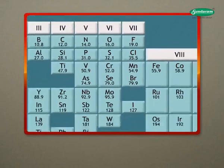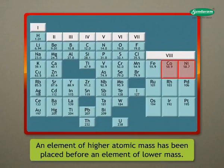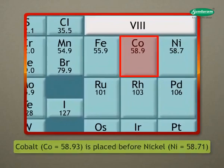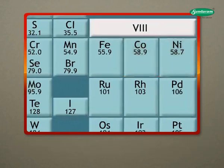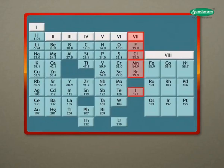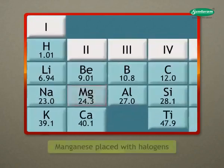At certain places, an element of higher atomic mass has been placed before an element of lower atomic mass. For example, cobalt with atomic mass 58.93 is placed before nickel of atomic mass 58.71. Some elements placed in the same subgroup had different properties. For example, manganese is placed with halogens, which totally differ in their properties.